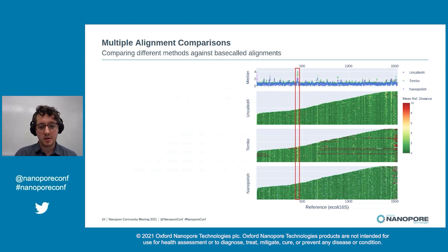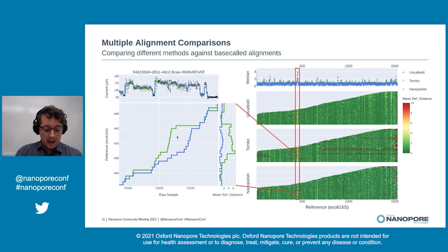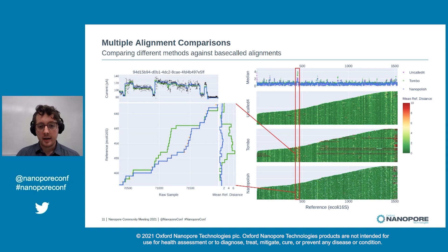Another thing that stands out is a position around 500, where all methods seem to be having trouble to varying degrees. Looking closer at an alignment around this region for Nanopolish and Tombo, Nanopolish is quite close to the base-called alignment while Tombo is a bit further away. We're still exploring exactly why this is happening. The signal is quite noisy in this region, and sometimes the signal gets noisy and we're not sure why. Our plan is to do a wider screen to find other examples and look for sequence motifs — such as low complexity sequence or evidence of secondary structure on the trans side of the pore.